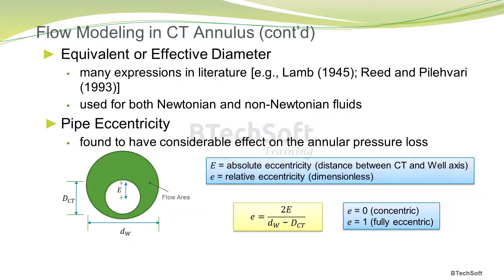Moreover, pipe eccentricity is found to have a considerable effect on the annular pressure loss. The distance between the coil tubing and the well axis renders the coil tubing to be in an eccentric position, and this distance is referred to as the absolute eccentricity. This absolute eccentricity is related to a dimensionless relative eccentricity through the coil tubing OD and well ID. Thus, for a concentric coil tubing the relative eccentricity is 0, whereas for a fully eccentric coil tubing in the well bore, the relative eccentricity is 1. The dimensionless relative eccentricity is more convenient and suitable for mathematical modeling.